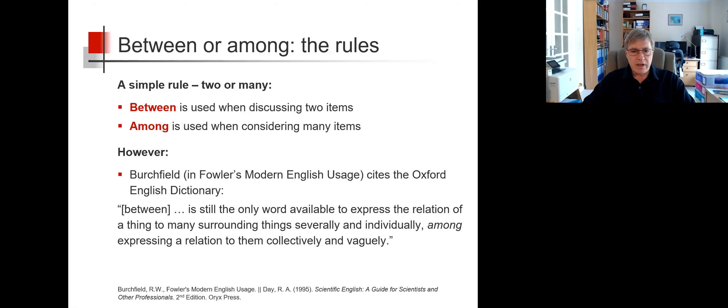But in Fowler's Modern English Usage, Birchfield cites the Oxford English Dictionary. Between is still the only word available to express the relation of a thing to many surrounding things severally and individually, whereas among expresses a relationship to them collectively and vaguely.